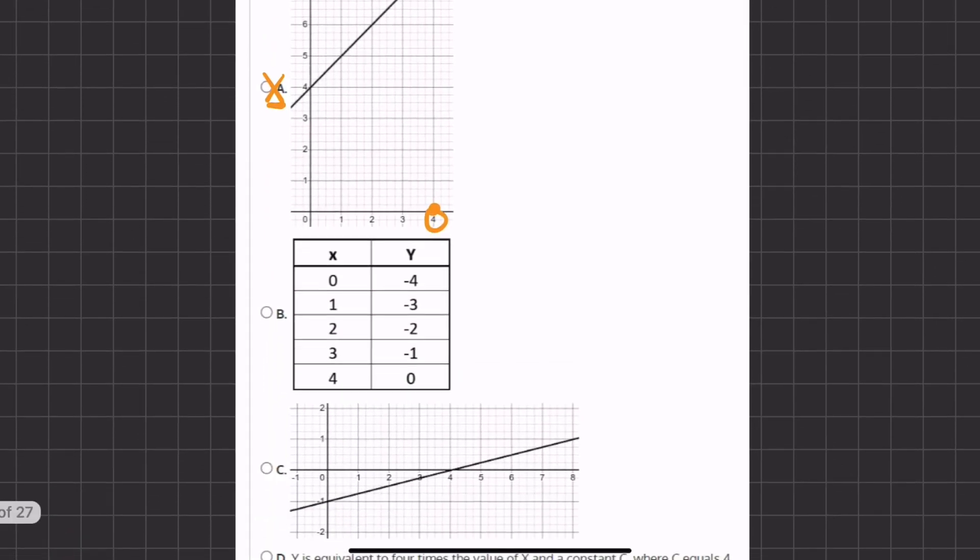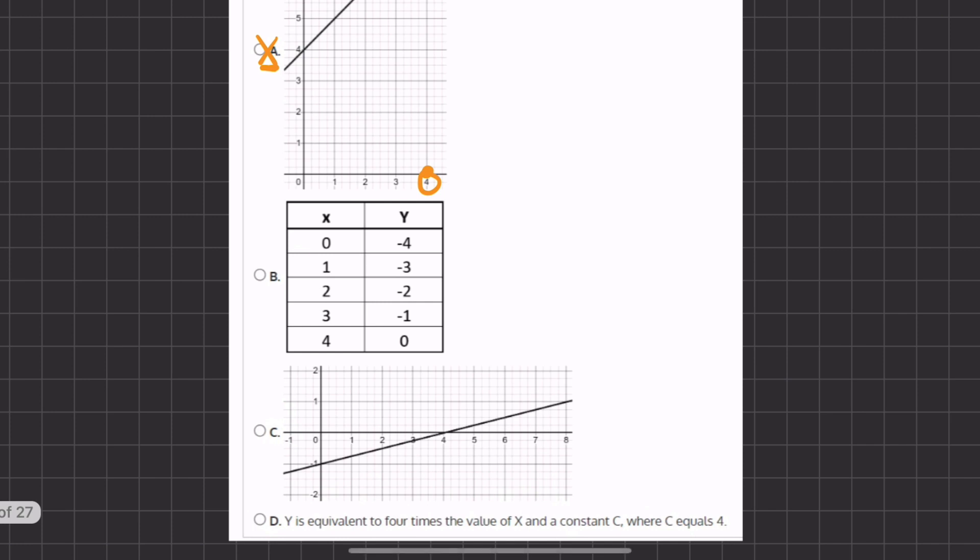Alright, so now let's move on to B. Here we have a given table that we have to see if it matches or corresponds to our given table in the problem. So here we can use our pattern that we recognized. And in our original pattern, every time that y grew by 1, the x grew by 4. And here, every time that the y grows by 1, the x also grows by 1. And that is a different pattern. Therefore, B is also not correct.